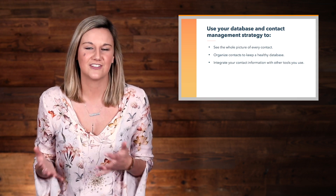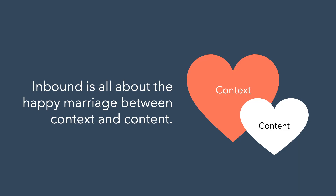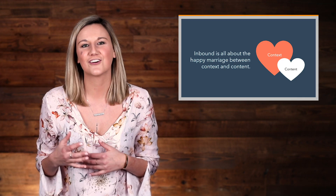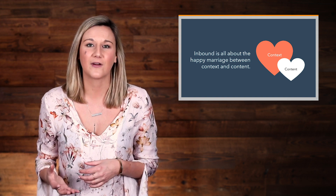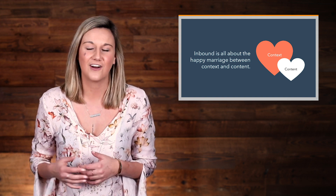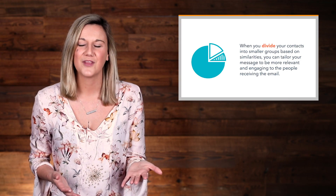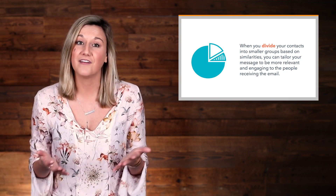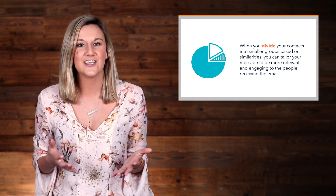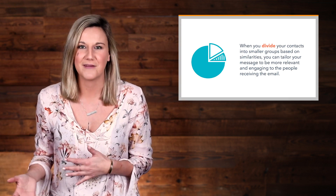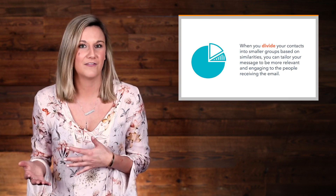This is what brings us to the foundations of segmentation. Inbound is all about the happy marriage between context and content. You need to treat your contacts as humans, and you do this through bringing context together with the content that you send them. When you divide your contacts into smaller groups based on similarities, you can tailor your message to be more relevant and engaging to the people receiving the email. For example, when you create a segment based on a recent webinar or event attended, the email you send will provide them with contextual information around what the webinar or event was on.